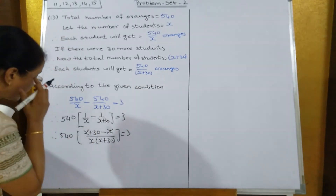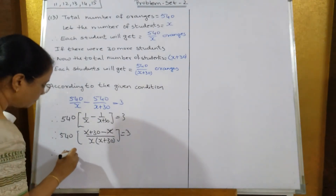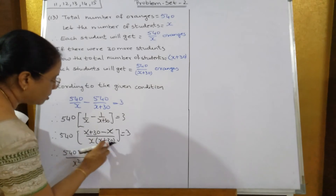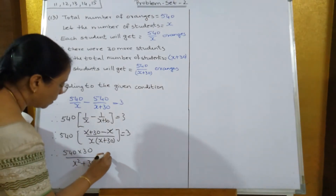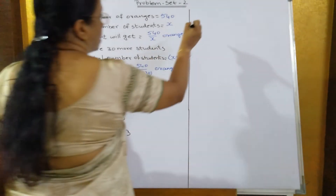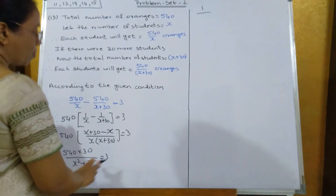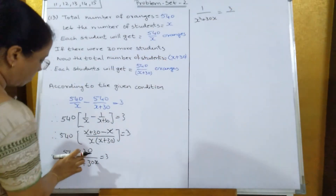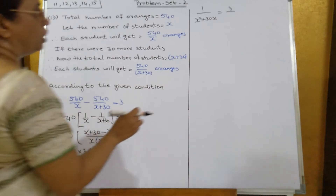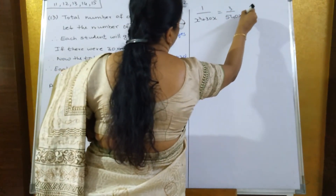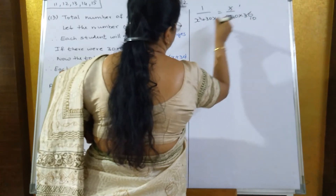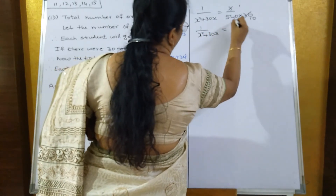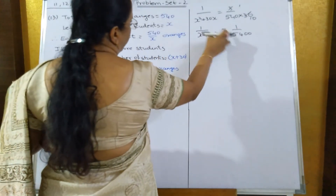The minus x and plus x cancel out, leaving 540 into 30 upon x squared plus 30x equals 3. Now bring the numbers across: 1 upon x squared plus 30x equals 3 upon 540 into 30. Simplifying, 540 into 30 divided by 3 gives 540 into 10, which equals 5400.